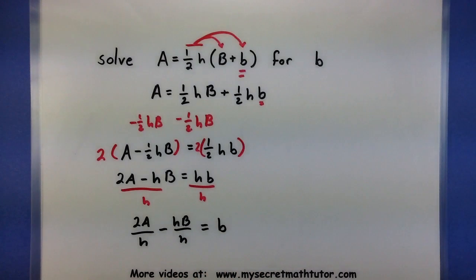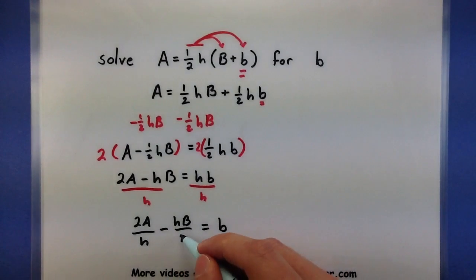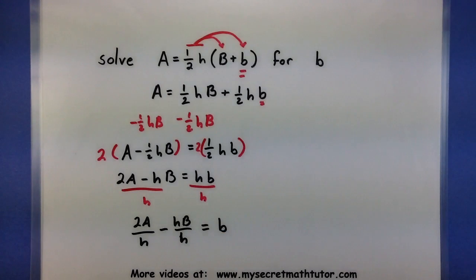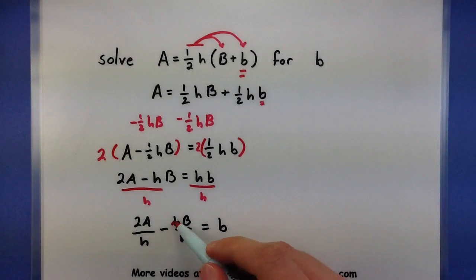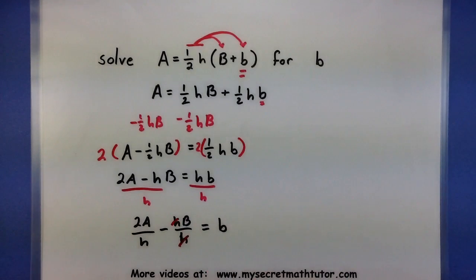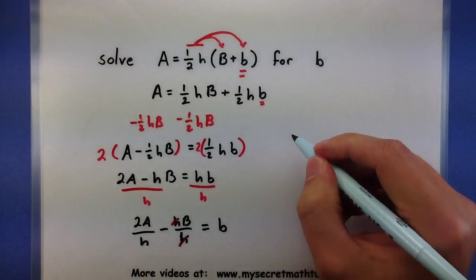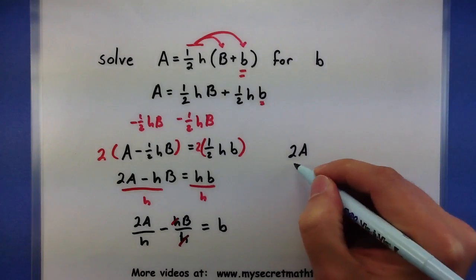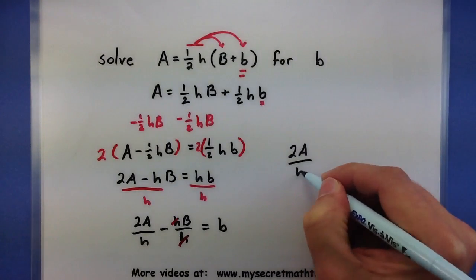Now this one is completely solved for b because b is now completely all alone — it's the only thing on one side of the equal sign. You could take this farther and simplify even a little bit more, like maybe cancel out a couple of h's. But the important part to recognize is when you have the variable you want completely isolated.